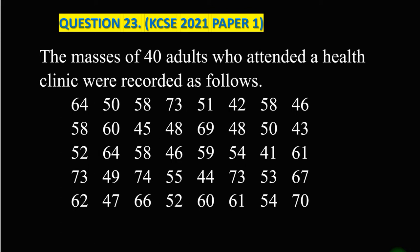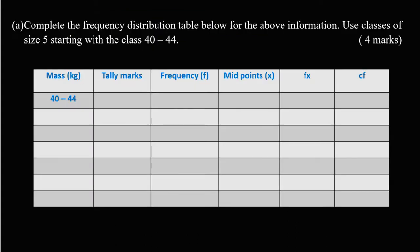We're going to look at Question 23, which was done in KCSE 2021 Paper 1 Mathematics. The question states that the masses of 40 adults who attended a health clinic were recorded. This is the data for the masses of those adults. The question asks us to complete the frequency distribution table below for the above information, using classes of size 5 starting with the class 40 to 44.